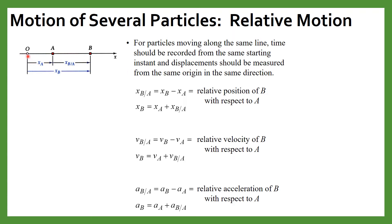This is the essential criteria: for both particles, or if we have more than two particles, the origin should be the same and the time from which we are recording the motion should also be the same. The relative position of B with respect to A is denoted by xB/A, which equals xB minus xA. If we want to find the position of B, we write xB equals xA plus xB/A. Similarly, we can write expressions for velocity and acceleration of particle B.